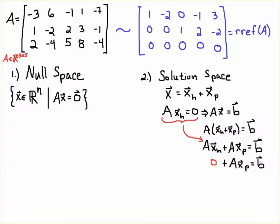Since Ax_h = 0, you're left with Ax_p = B — it's the particular solution that gives you the right-hand side. If you have a unique solution, the only solution to the homogeneous equation is the zero solution. But when there are infinitely many solutions, it's the Ax = 0 part that contributes the free variables and the infinite number of solutions.